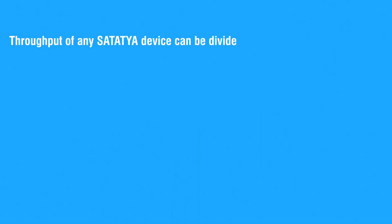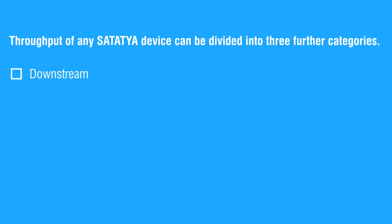Throughput of any Satathya device can be divided into three further categories: first, downstream; second, stream limit; and third, upstream.